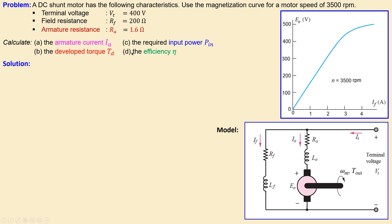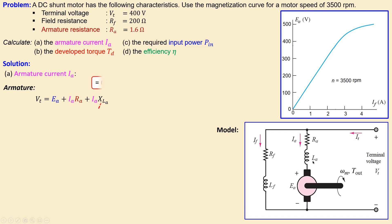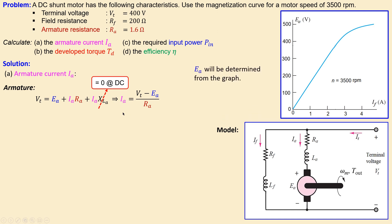For the armature current we look at the armature branch and set up Kirchhoff's Voltage Law from one node to the other. The terminal voltage VT is across three elements: the armature resistance, the armature inductance, and the back EMF. Since we have a DC system, the reactance of the armature inductor is zero, so that term drops out. This simplifies the expression and gives us the equation for armature current. To get a numerical value, the back EMF must first be determined.